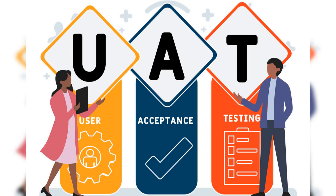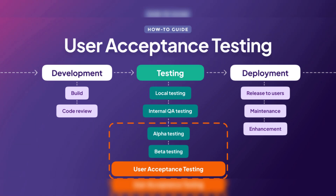Finally, User Acceptance Testing (UAT) is another way to test your application security. UAT involves having users test your application to identify any vulnerabilities or issues that may have been missed during development or testing. UAT can be a valuable way to identify security issues that may only be apparent in a real-world environment.